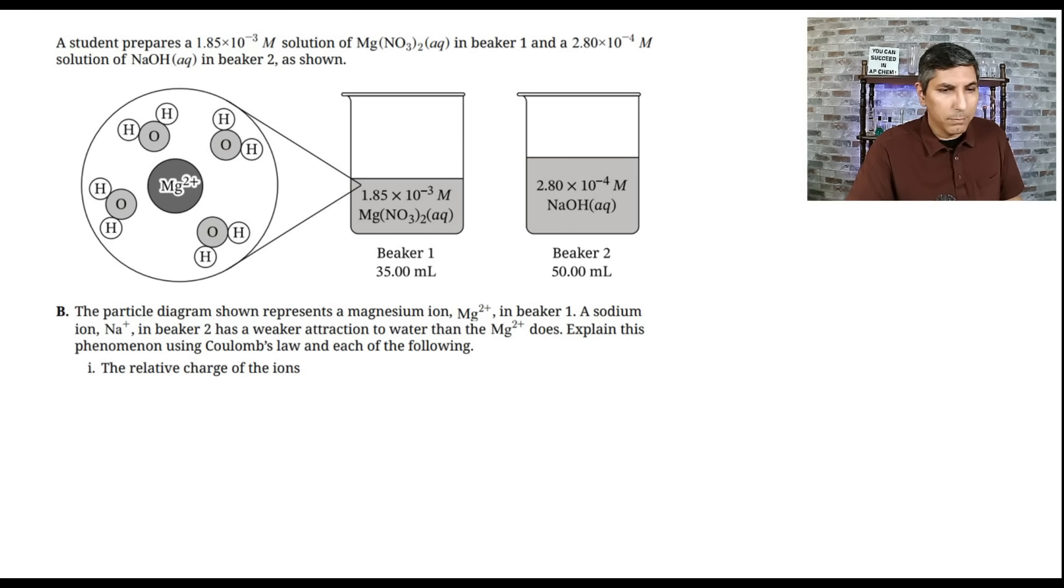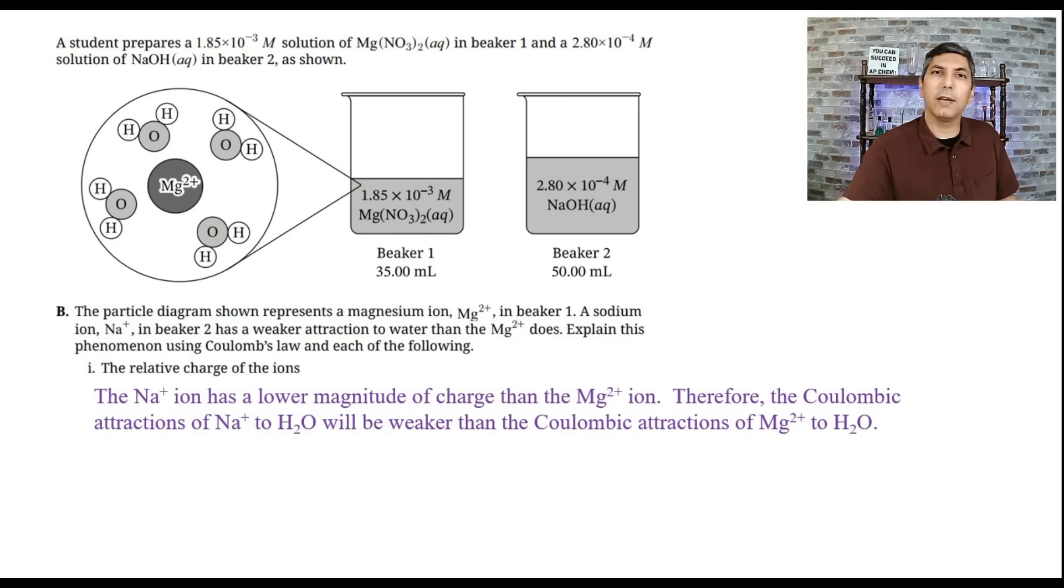A sodium ion in beaker two has weaker attraction to water than the magnesium ion does. Explain this phenomenon using Coulomb's law and each of the following. So part one talks about the relative charge of the ion. So what you want to say here is that the sodium ion has a lower magnitude of charge than the magnesium 2+ ion. One plus, of course, has less charge than a two plus. And so that means that the Coulombic attractions of the sodium ion to water molecules will be weaker than the Coulombic attractions of magnesium 2+ ions to water. So if you said something like that, give yourself a point for that.